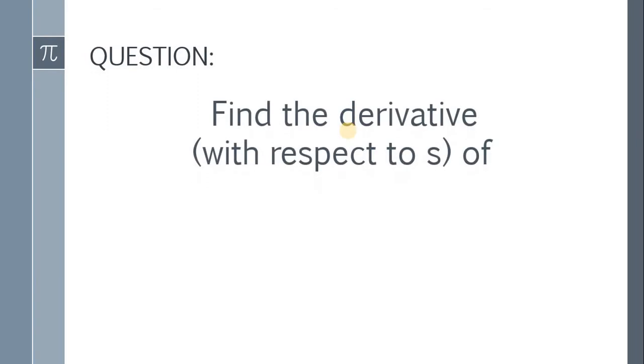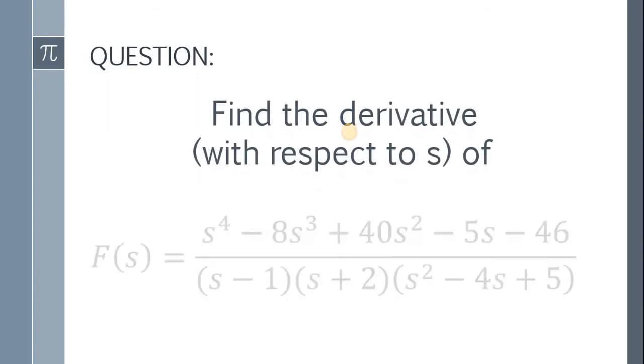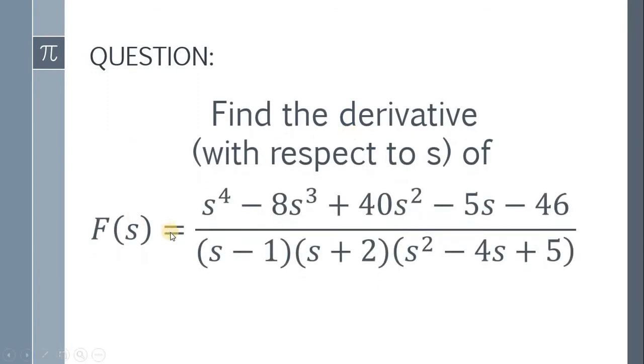Here's the question. Find the derivative with respect to s of F(s) = (s^4 - 8s^3 + 40s^2 - 5s - 46) / [(s - 1)(s + 2)(s^2 - 4s + 5)].